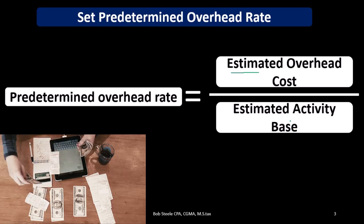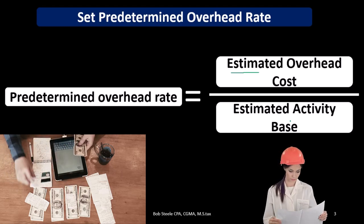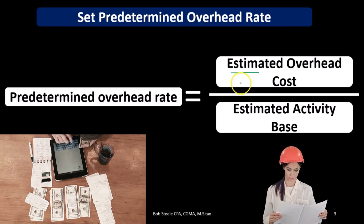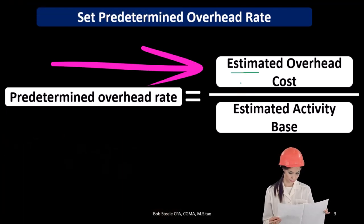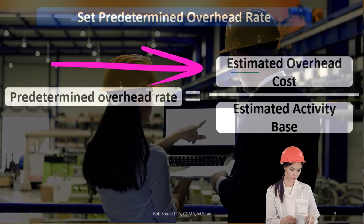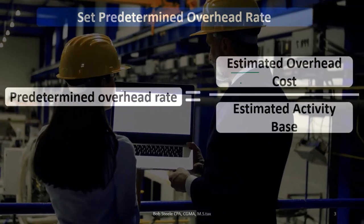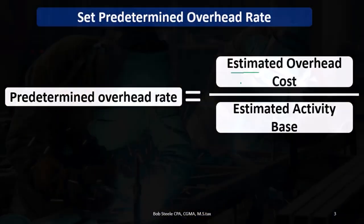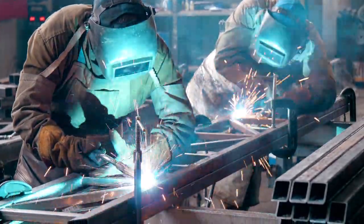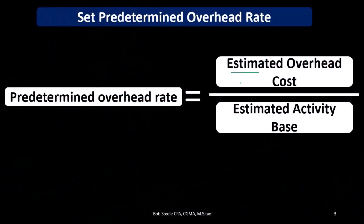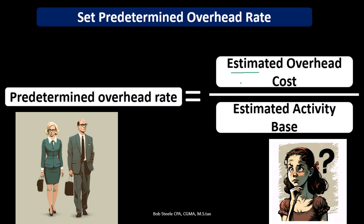The activity base is based on the idea that we need something to tell us how large one job is relative to another. If we think we're going to work on 10 jobs, we can't just divide total overhead by 10, because even if we knew there were only 10 jobs, they'd all be different in size — that's the whole point of a job cost system. So we need some factor that tells us the relative size of each job, and that's the activity base.